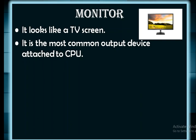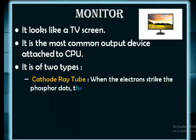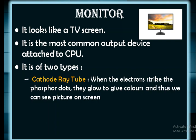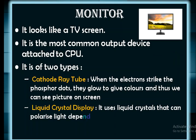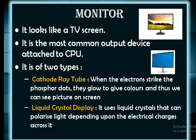The monitor has a wire that is attached to the CPU. Monitor is of two types. First is cathode ray tube, called CRT. When electrons strike the phosphor dots, they glow to give colors and we can see the picture on screen. CRT monitors are bigger in shape from the back and were used earlier. The other type is liquid crystal display, or LCD. It uses liquid crystals that can polarize light depending upon the electrical charges across it. LCD monitors are quite slim in shape and are commonly used nowadays.